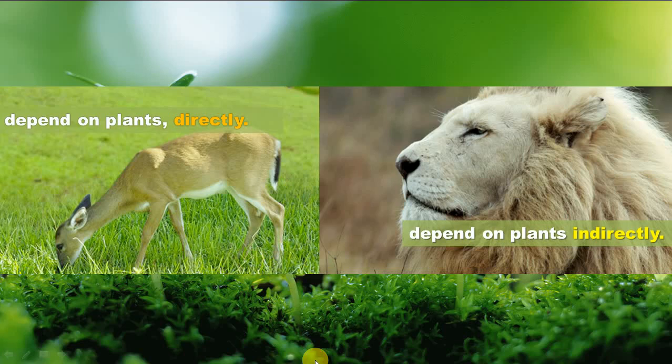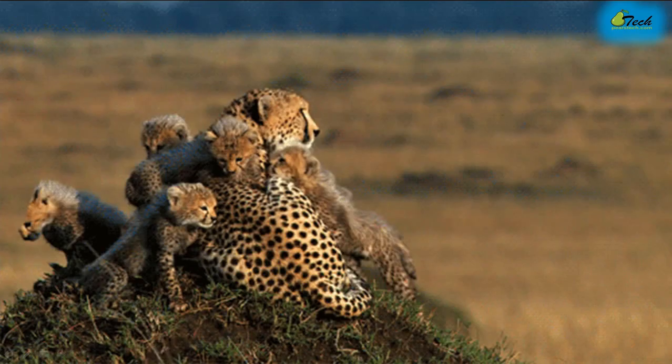Slide number three. We have two different kinds of animals: one that depends on plants directly, and one that depends on plants indirectly.